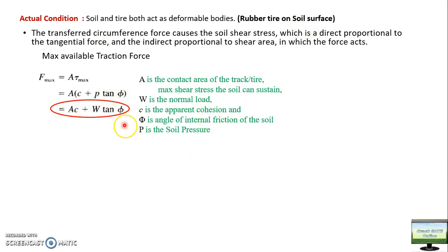Now we will see there are two parts in this equation: one is the AC part, and the second one is the W tan phi part. We will see each one.